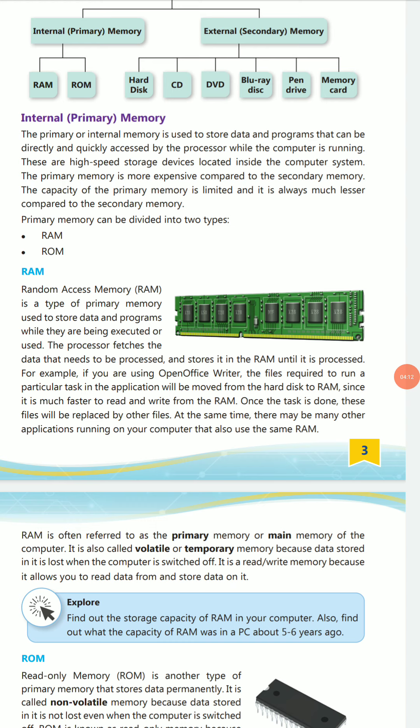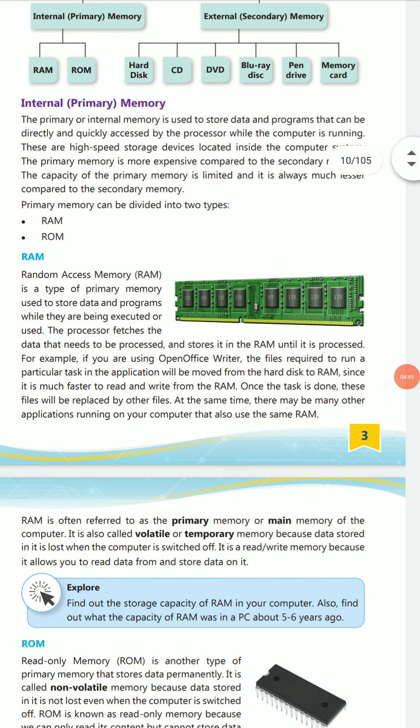Primary memory is divided into two parts: RAM and ROM. RAM stands for Random Access Memory. It stores different types of programs during execution. The processor fetches data it needs to process and stores it in RAM until processing is complete. For example, if you are using an office application, the required files move from ROM into RAM since it is much faster to read and write from RAM.